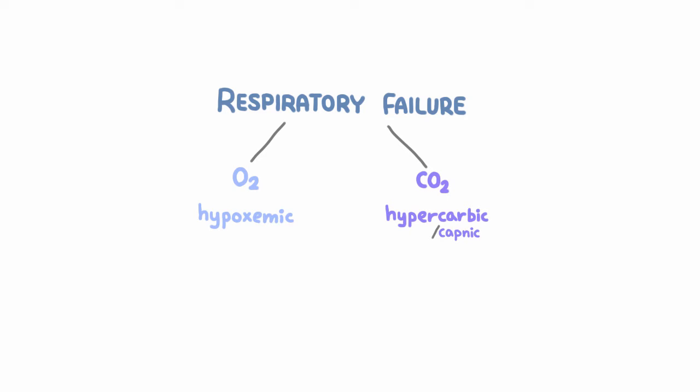In hypoxemic respiratory failure, patients have a decrease in blood oxygenation, which we call hypoxemia. This is usually defined as starting when the arterial partial pressure of oxygen — written as PaO2 with a lowercase a — falls below 60 millimeters of mercury.